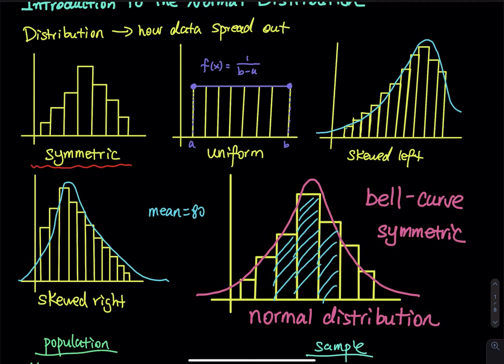Skewed to the left means we have small observations on the left; the mean is being pulled to the left. Skewed to the right means we have big observations on the right and the mean is pulled away from the center. For skew left, the mean is being pulled away by the small values so it is no longer in the center — we use the median as the center. For skew right, we have big values on the right and the mean is pulled to the right, so again the center is the median.